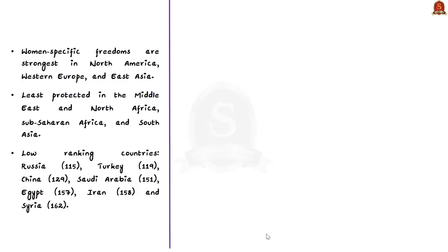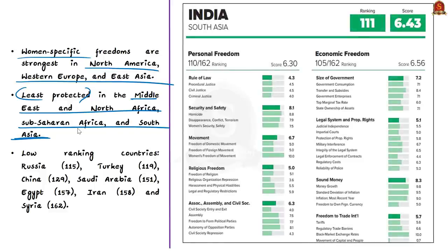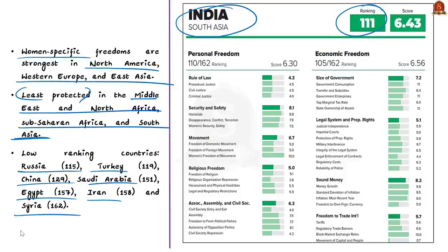It also talks about women-specific freedoms, and it is measured by five indicators. The report says that women-specific freedoms are the strongest in North America, Western Europe, and East Asia. It also says that freedom of women are least protected in the Middle East, North Africa, then Sub-Saharan Africa, and South Asia. And as we have said, India is ranked at 111th position out of 162 countries. Some countries which ranked below India are Russia, Turkey, China, Saudi Arabia, Egypt, Iran, and Syria. Now have a look at this figure to know where India stands in each of the indicators.